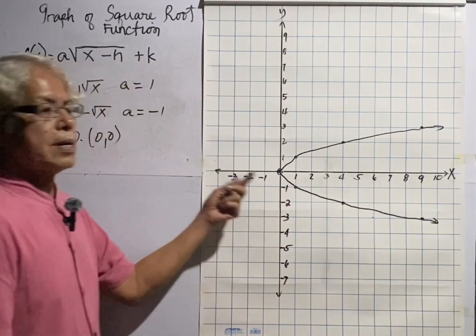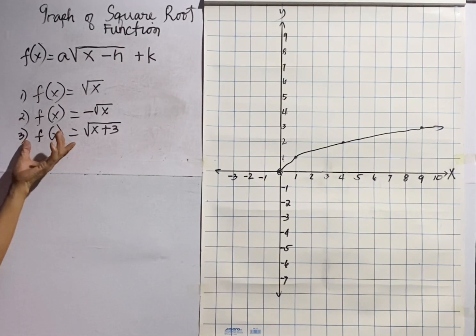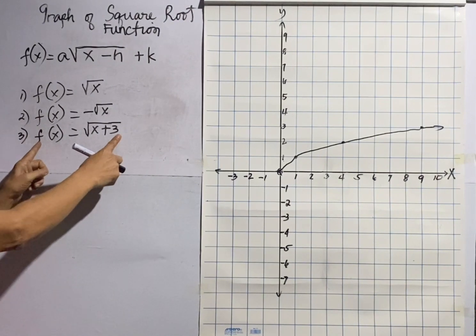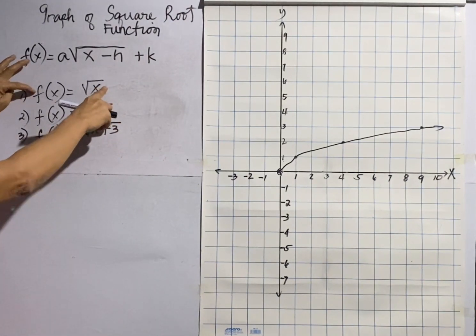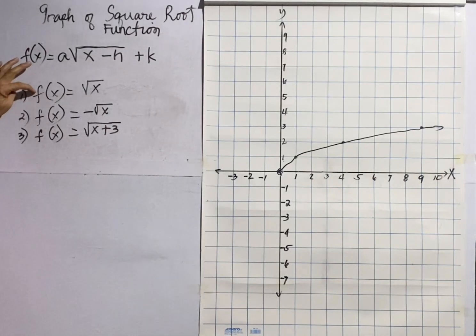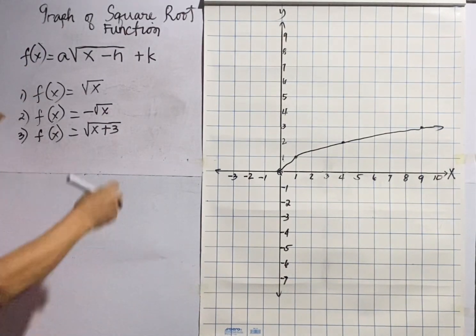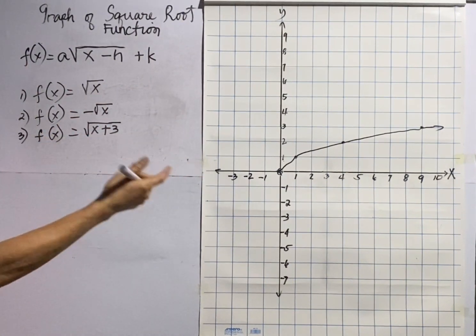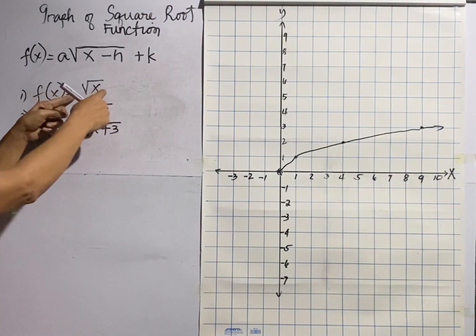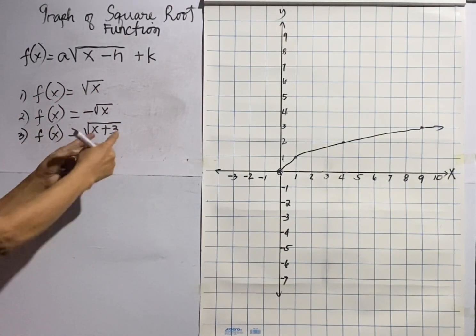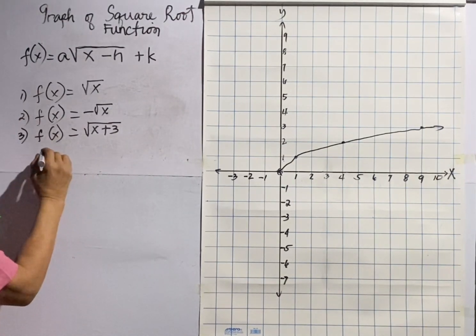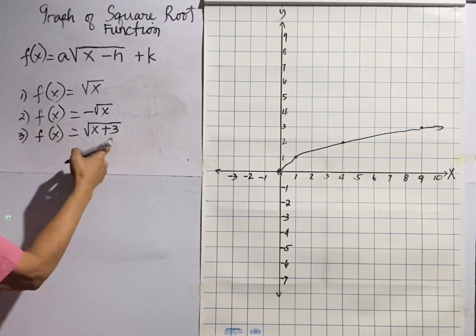Let us have another example. The graph of this square root function is the same as the graph of our parent square root function. The only difference is that the graph is shifted to the left — the point of origin is shifted three units to the left. To find the point of origin, equate the radical to zero.